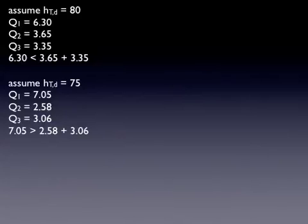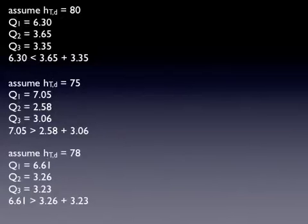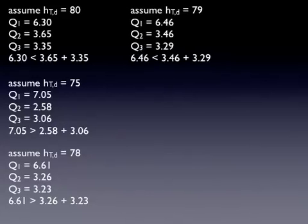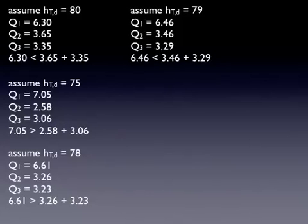Now I'm getting a little too much flow out of pipe 1. So I've got to go higher. So somewhere between 75 and 80. Let's pick 78. Still a little too much flow coming out of pipe 1. So I've got to go higher. Somewhere between 78 and 80.